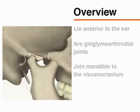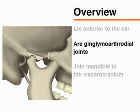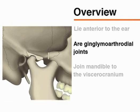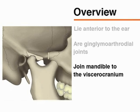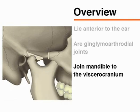The temporomandibular joints, or TMJs, are anterior to the ear. They are ginglymoarthroidal joints, which permit both rotational and sliding movement. The temporomandibular joints, which are on each side of the lower jaw, join the mandible to the visceral cranium and allow the mouth to open and close.